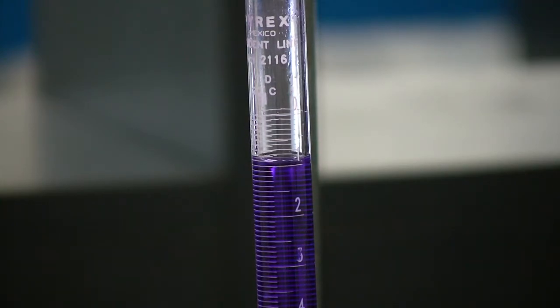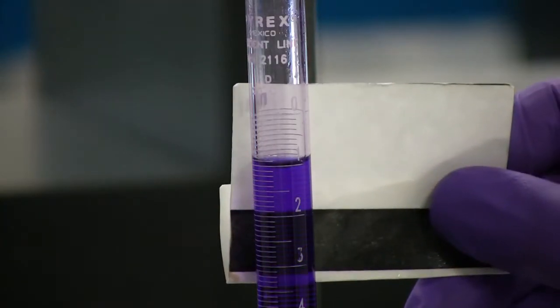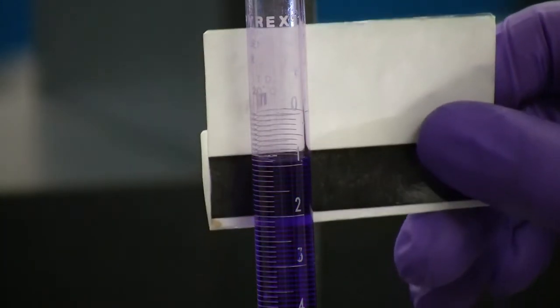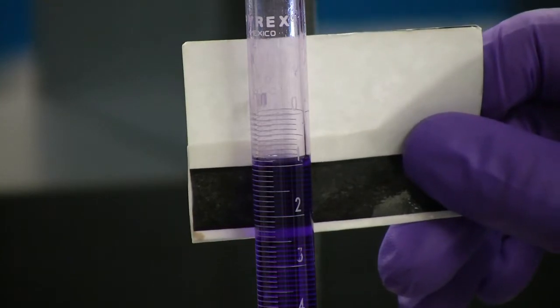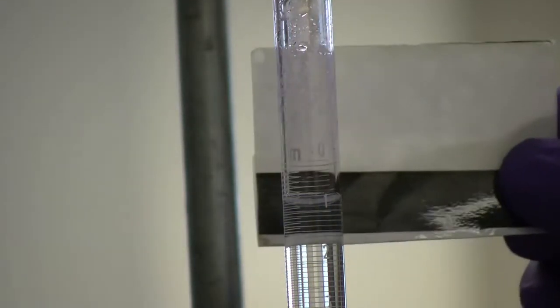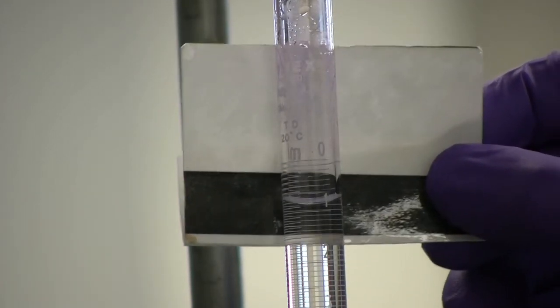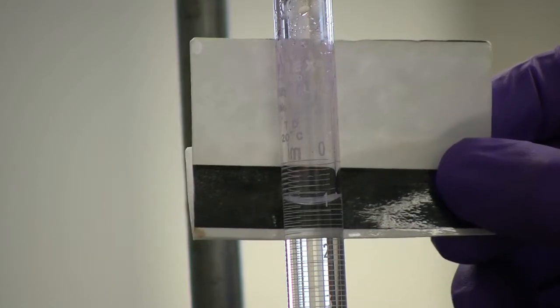Using the burette card on a dark solution can make it hard to understand where the meniscus is. So for a dark solution as such, it is usually ignored. On the other hand, a clear solution when using the burette card behind it, it is very easy to see the meniscus and is very helpful in this situation.